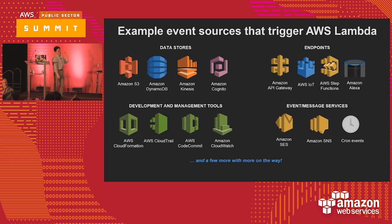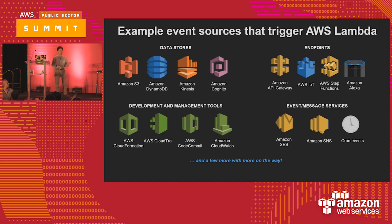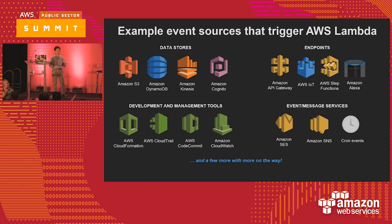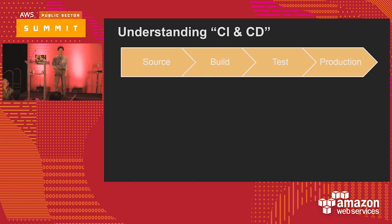For event sources, the most common ones include data stores - updating something in a DynamoDB table or uploading a file to S3 can trigger an event. Endpoints such as API Gateway calls, events from Amazon Echo, and development and management tools can trigger events too. Of course, our messaging services SQS, SNS, and CloudWatch events can trigger Lambda functions as well. That's my quick introduction to serverless computing - we have a lot of blogs, white papers, and videos you can explore.